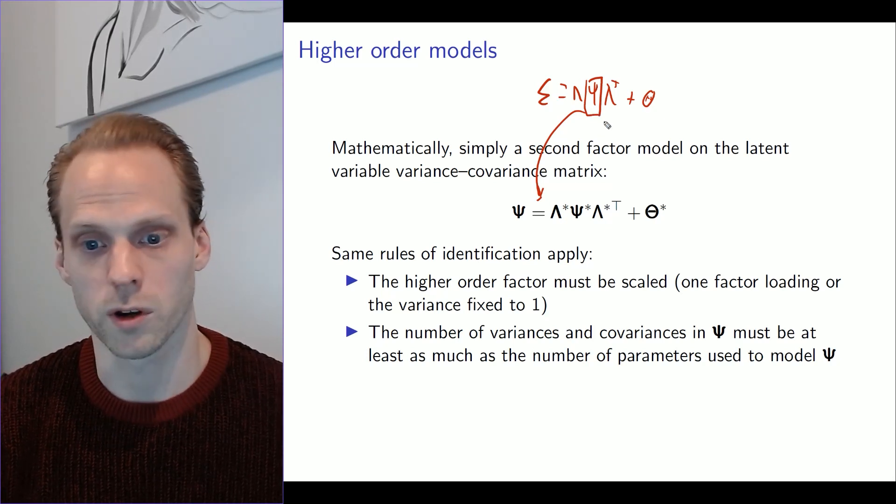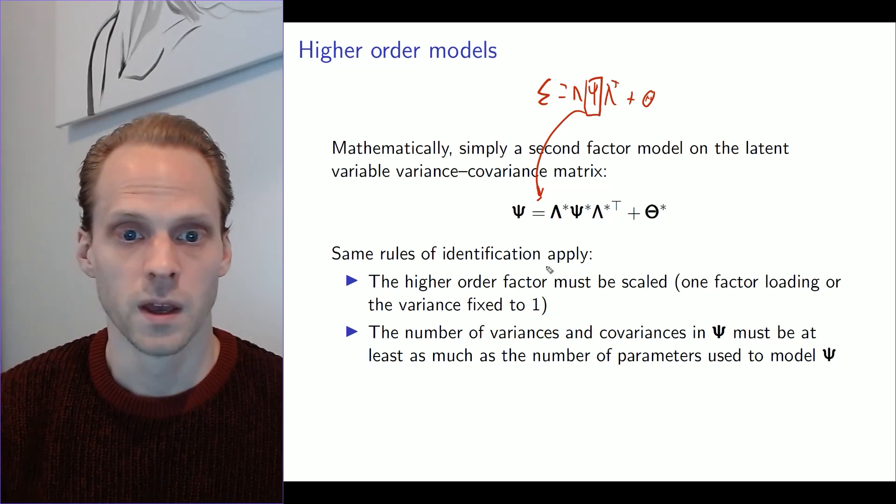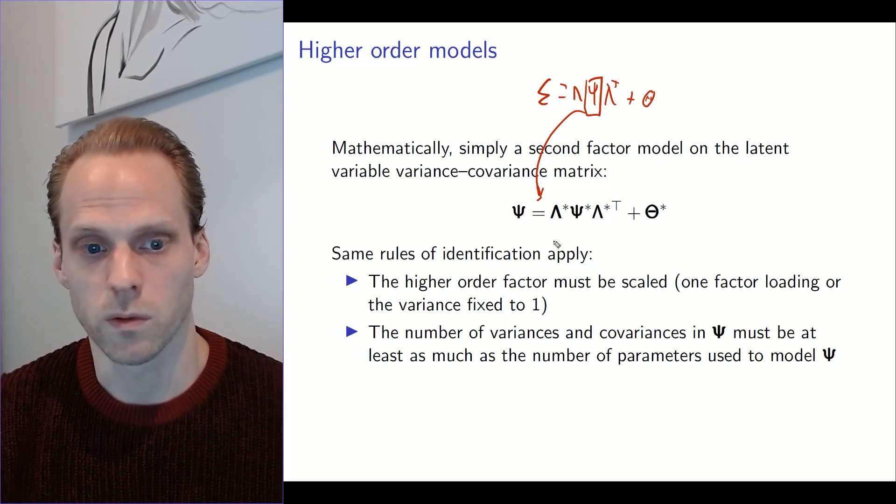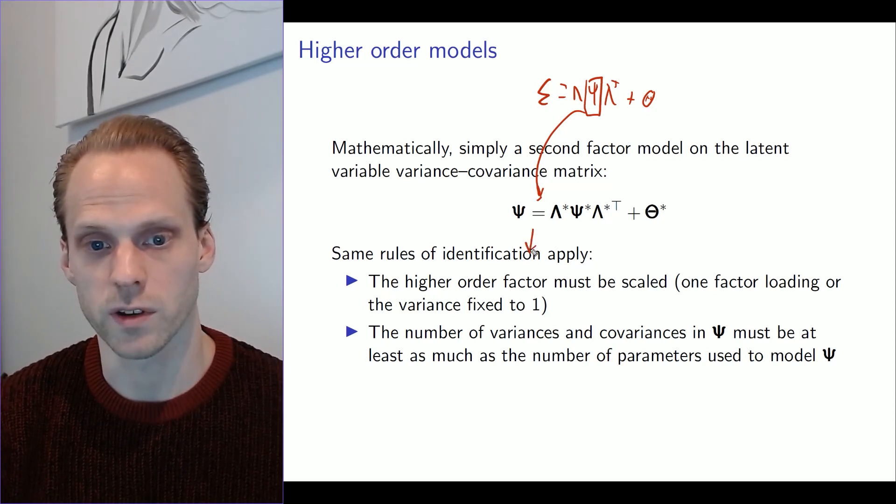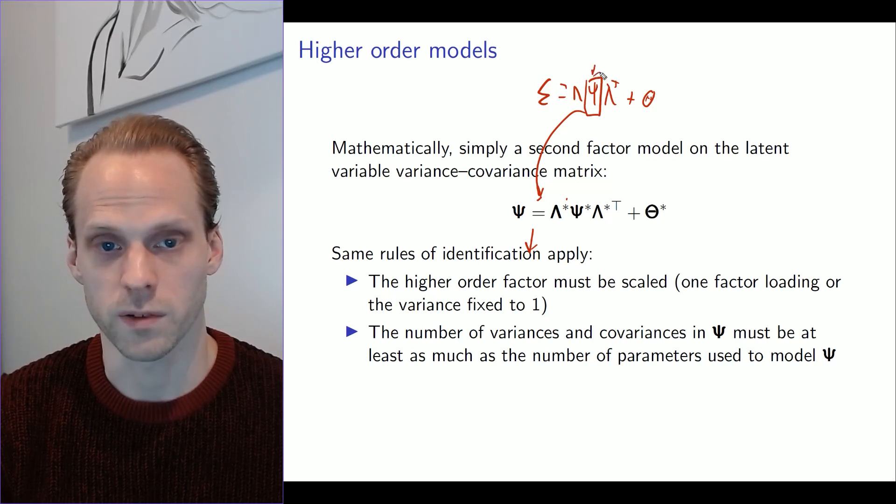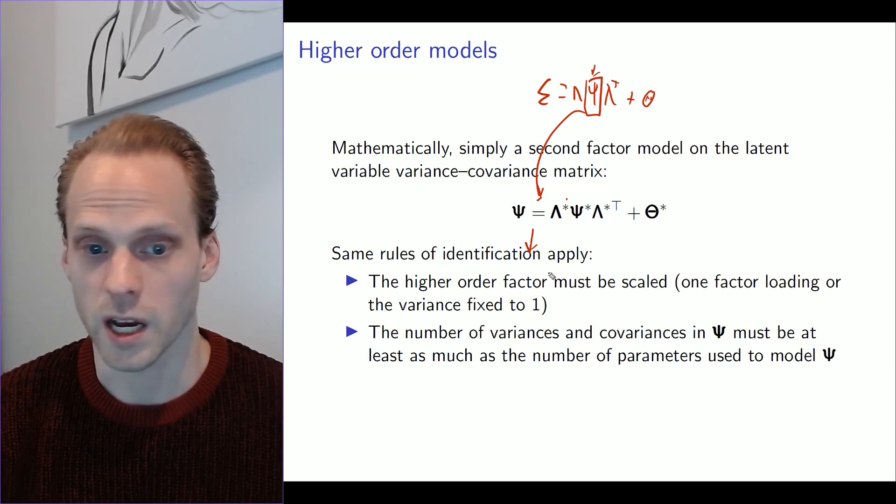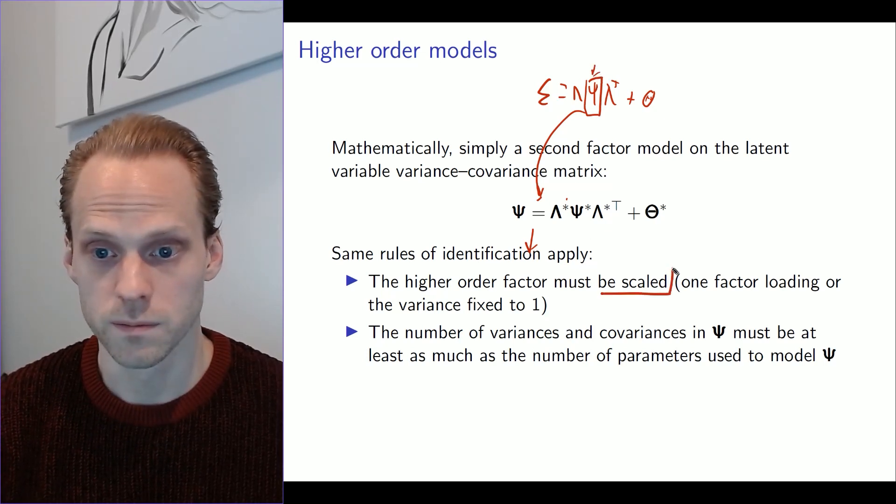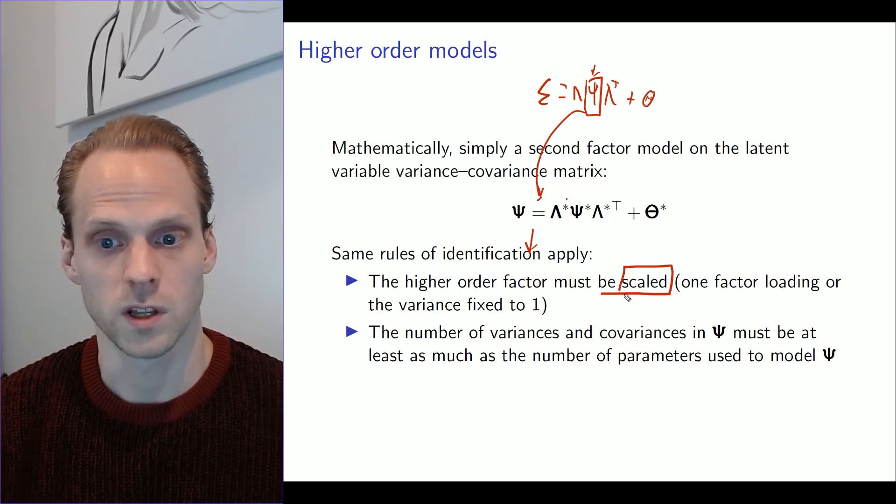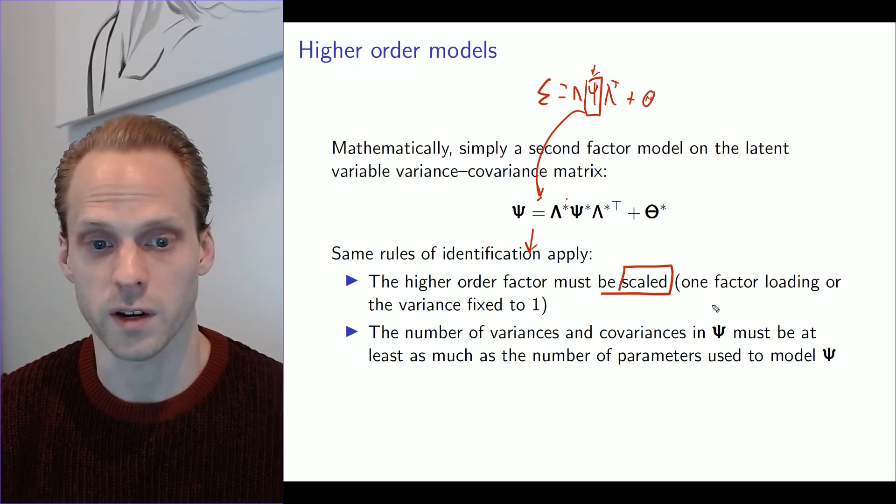And we can keep going on and on as well. This is just exactly the same as before, so we need to have the same rules for identification. Our latent model also needs to be identified. So that means that the higher-order factor must also be scaled. We need to put one factor loading or factor variance to one.